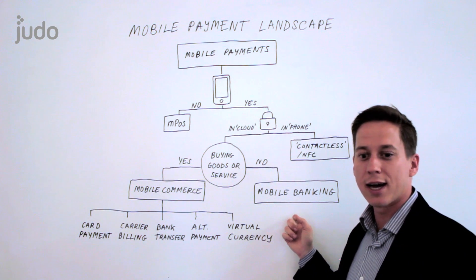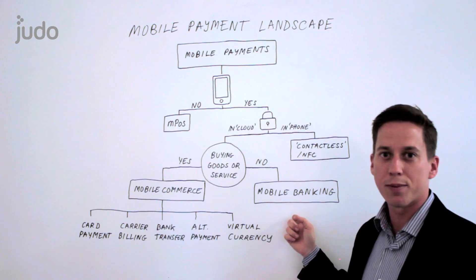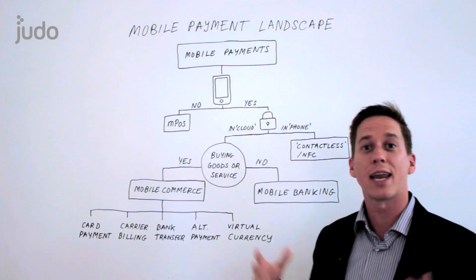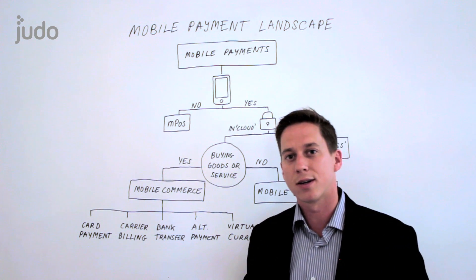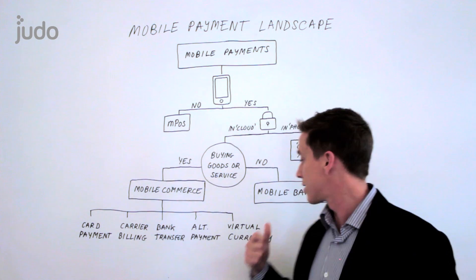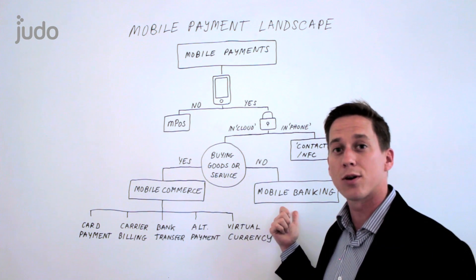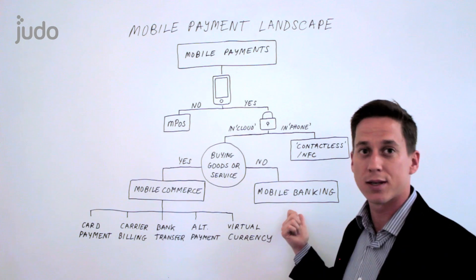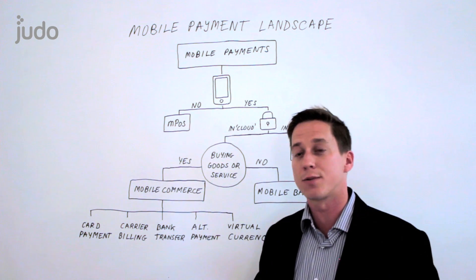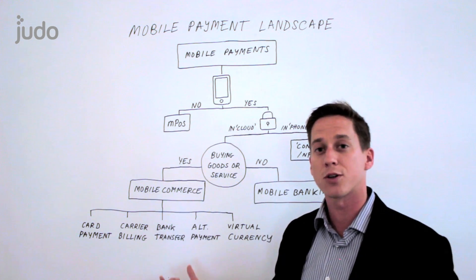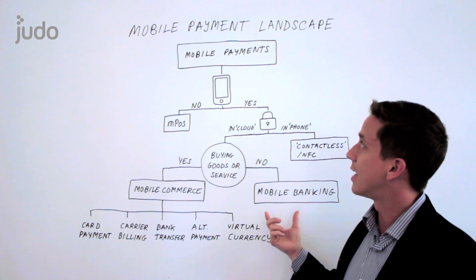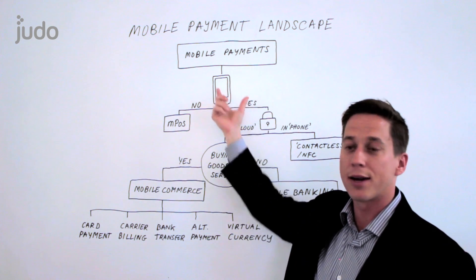Moving on to mobile banking — this is very popular in the developing world. The real problem being solved is that people did not have bank accounts or access to banks, so the mobile phone became a currency you could trade back and forth. Sometimes it's done in the form of actual calling credits, and sometimes it's actual movement of money. Mobile banking is a separate world that unfortunately is being combined under mobile payments.